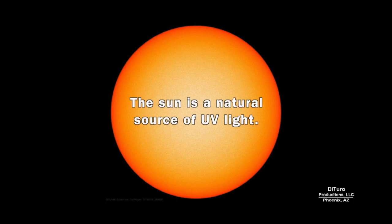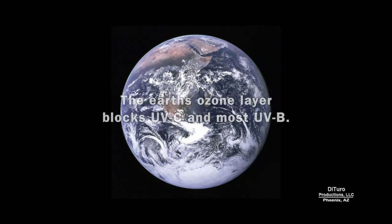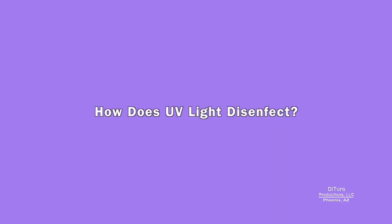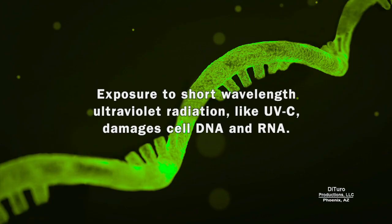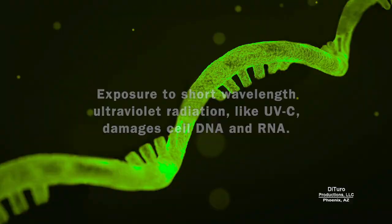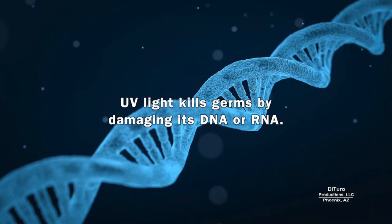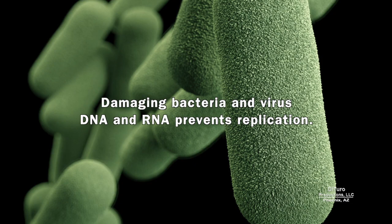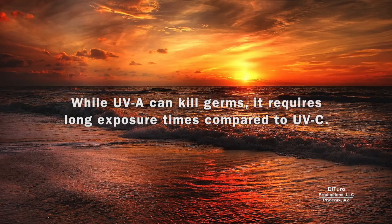The Sun is a natural source of UV light. The Earth's ozone layer blocks UVC and most UVB. Exposure to short wavelength ultraviolet radiation, like UVC, damages cell DNA and RNA. UV light kills germs by damaging their DNA or RNA. Damaging bacteria and virus DNA and RNA prevents replication. While UVA can kill germs, it requires long exposure times compared to UVC.